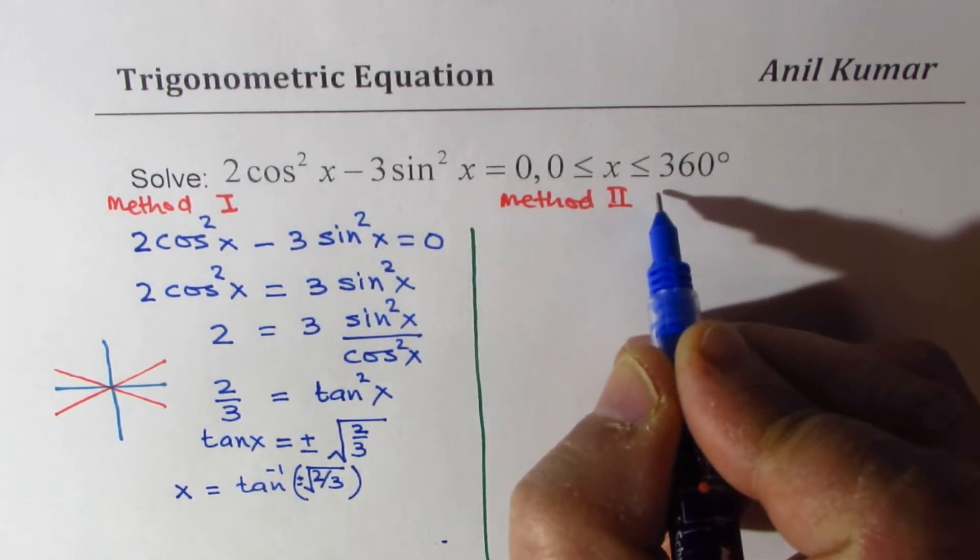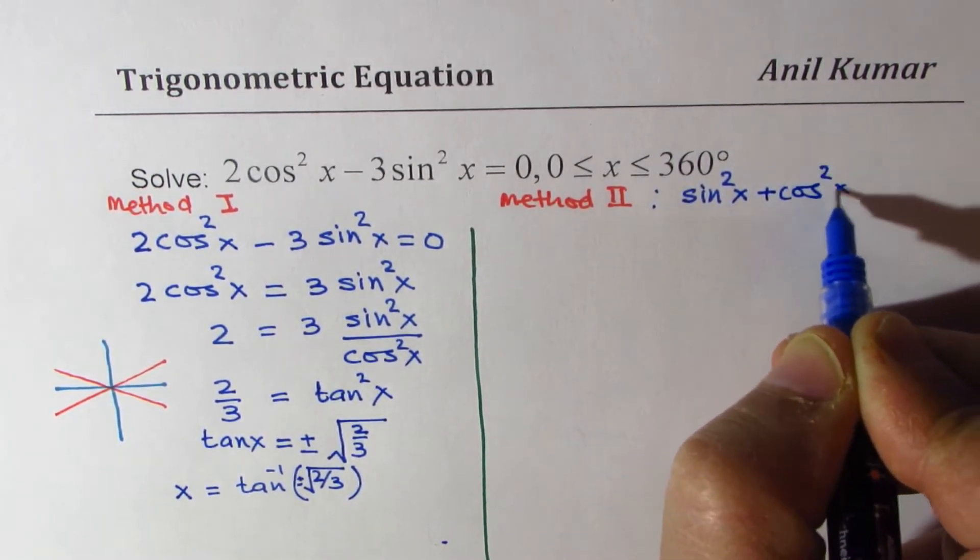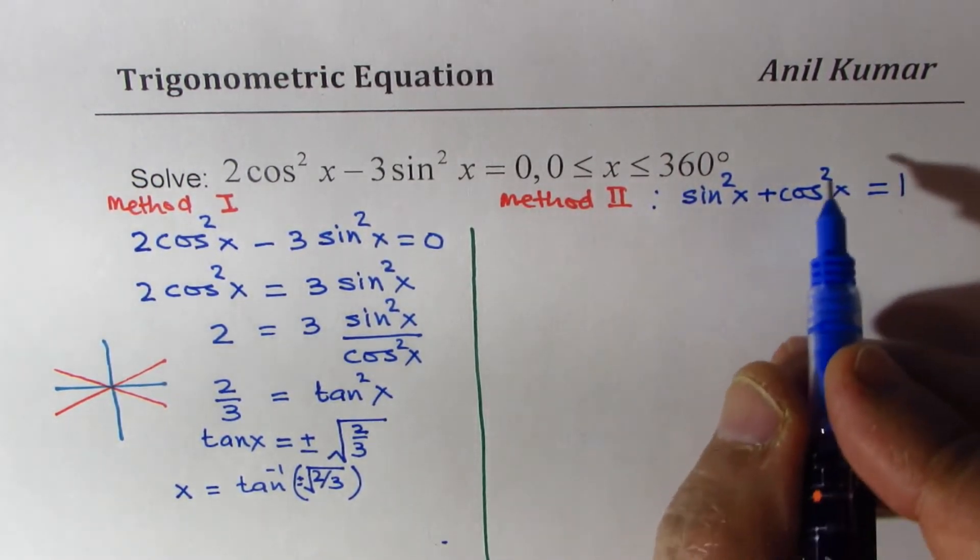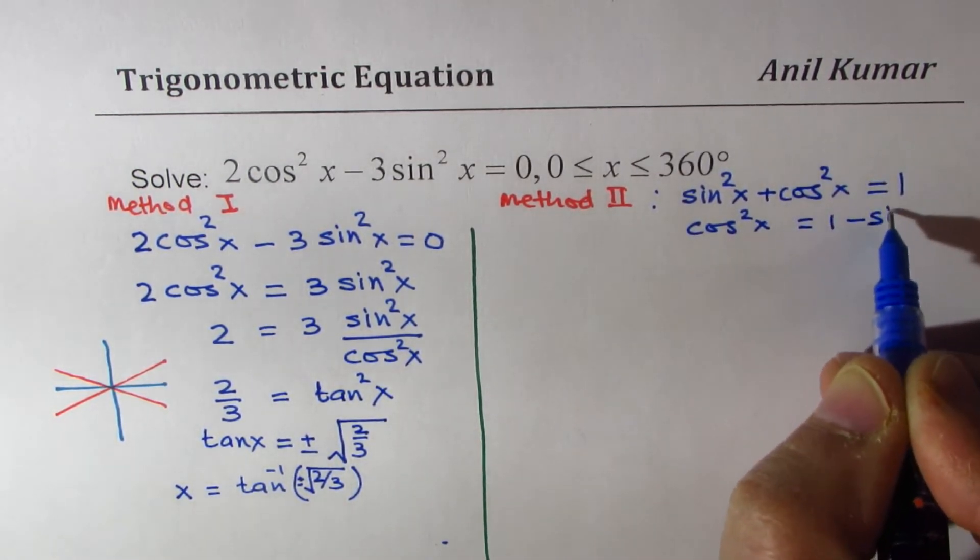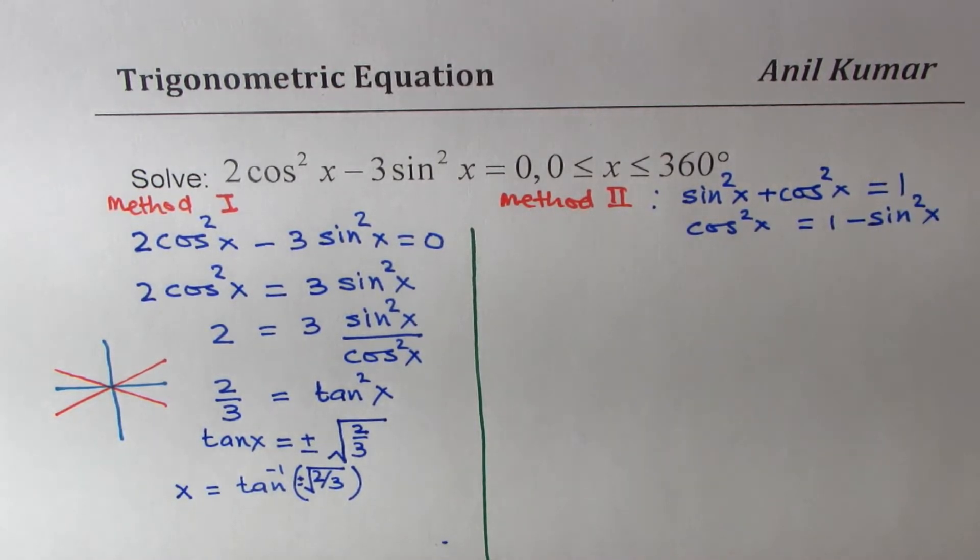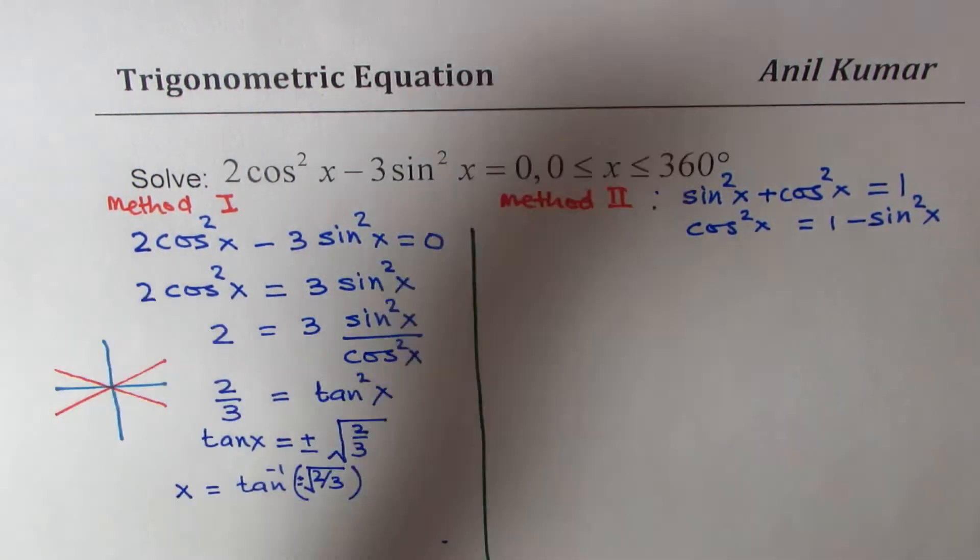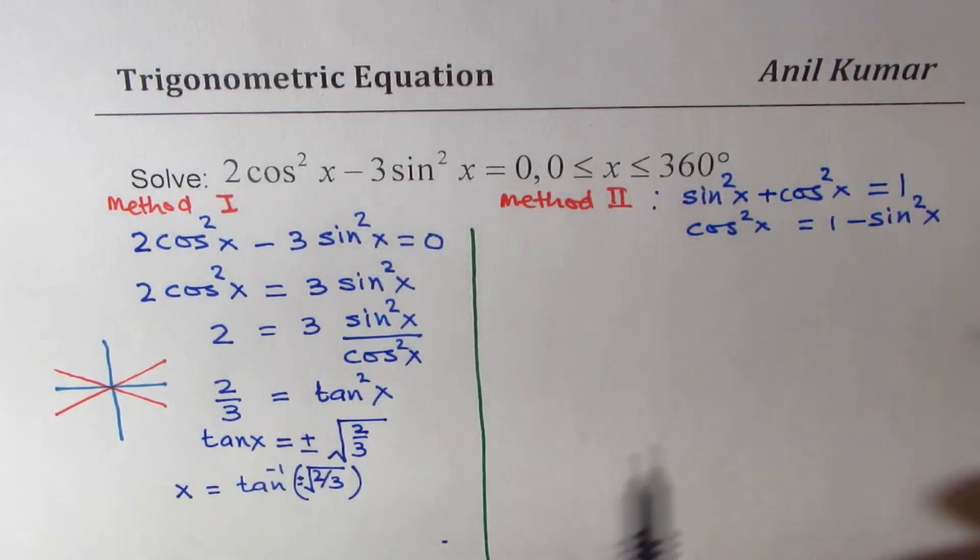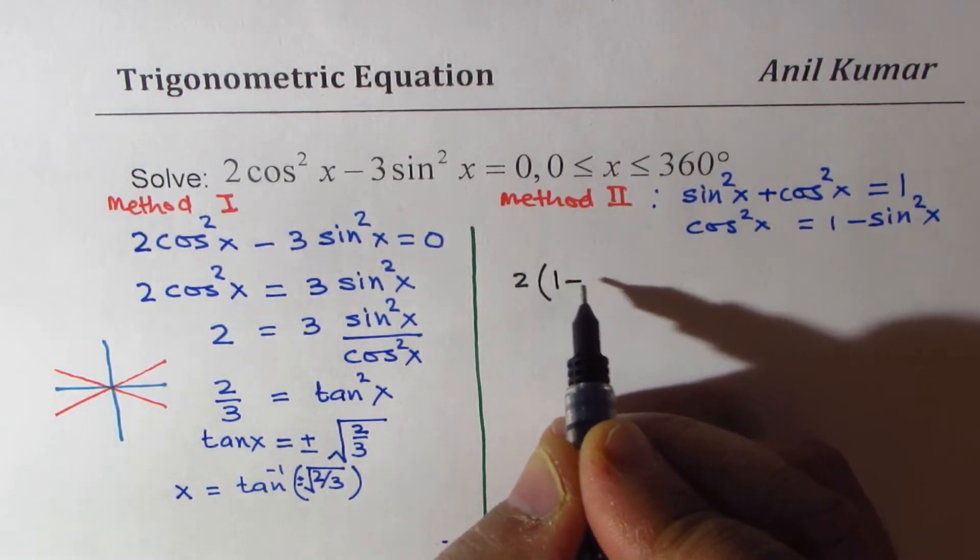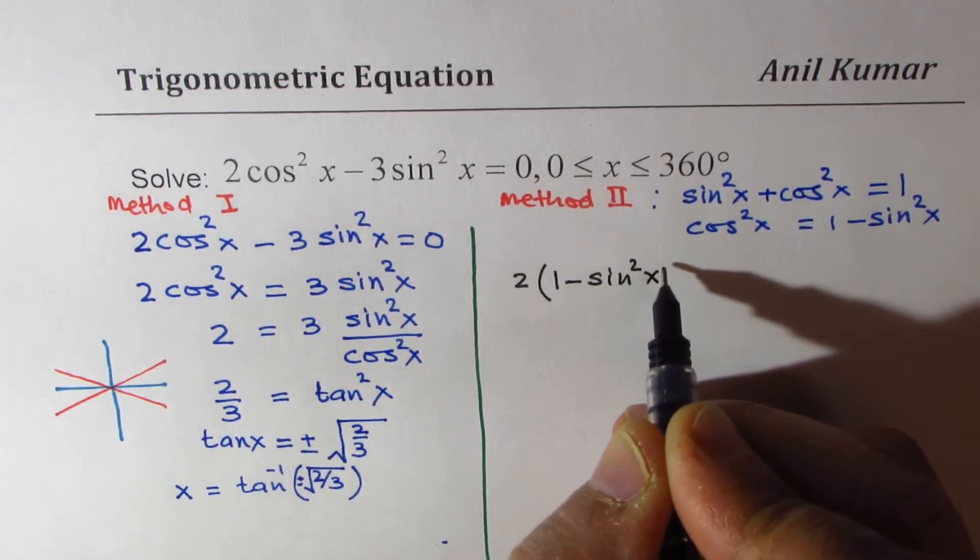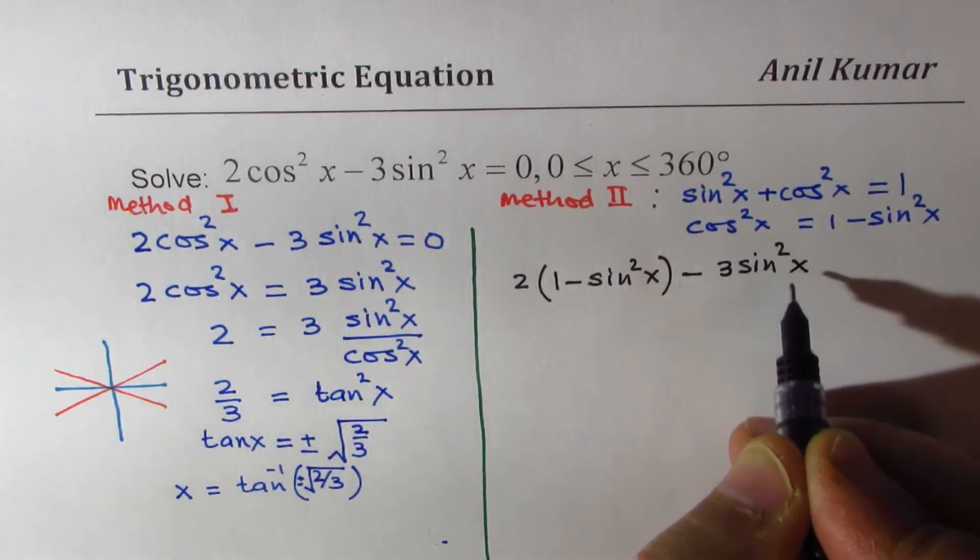Since you know that sin²x + cos²x = 1, from here you can rearrange and write cos²x = 1 - sin²x. So if I make that substitution, I can write my equation as 2(1 - sin²x) - 3sin²x = 0.